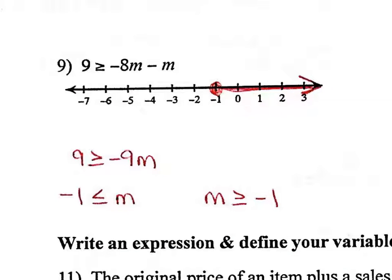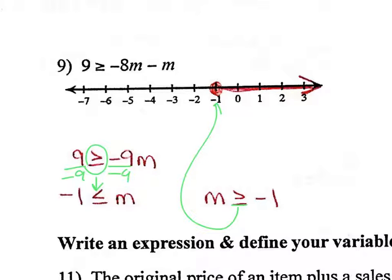Question 9: the first thing I did was combine like terms — negative 8 and negative 1 gives me negative 9m. I divide both sides by negative 9, and since I'm dividing by a negative number, I had to flip the symbol, so it becomes less than. Then I need my variable to end on the left, so I read it backwards: m is greater than or equal to negative 1. The equal to tells me to do the closed circle, and greater than tells me to shade to the right.